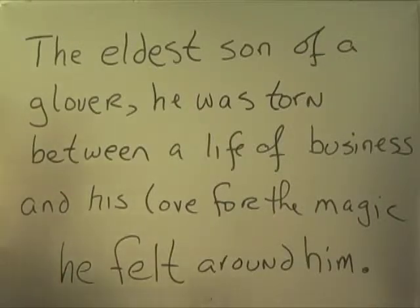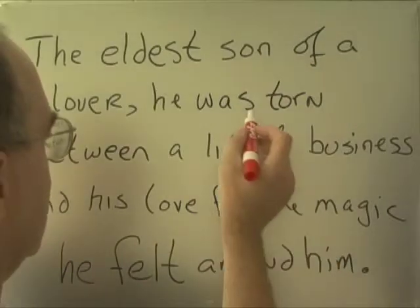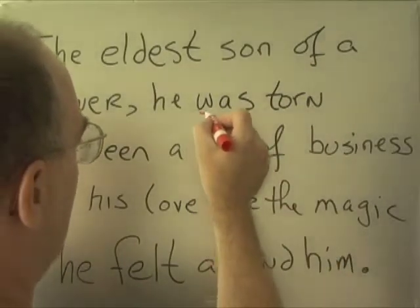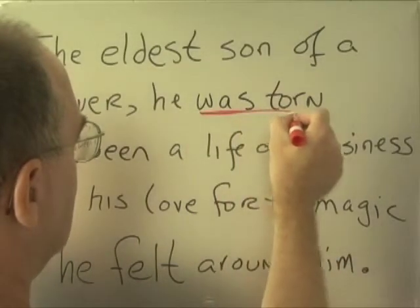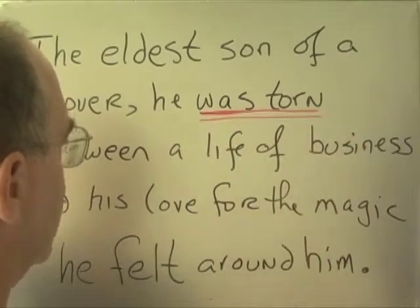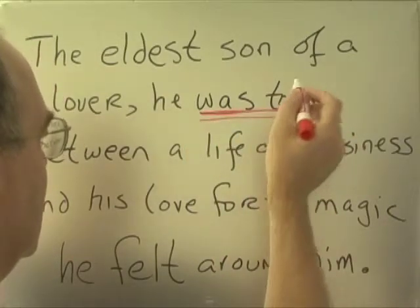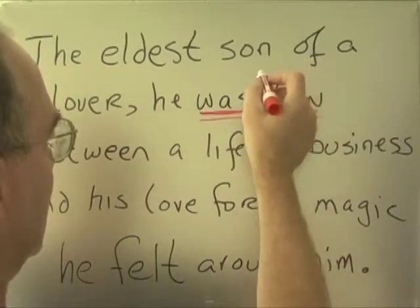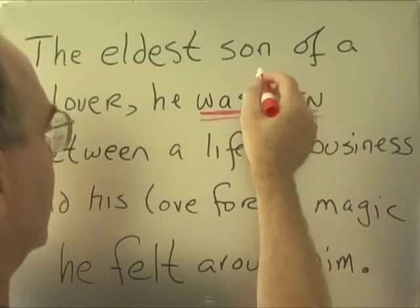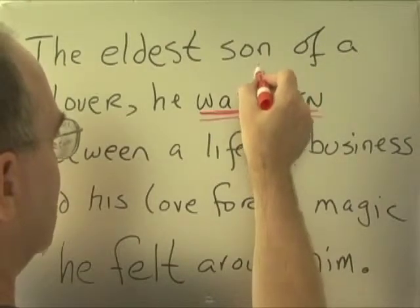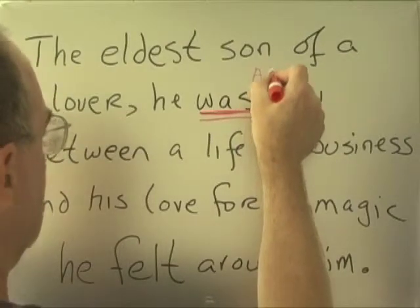Let me look for the verb first — verbs probably. Here's 'was,' an auxiliary helping verb with 'torn.' 'Was torn' is the past tense form of the verb 'to tear.' That's an action verb.